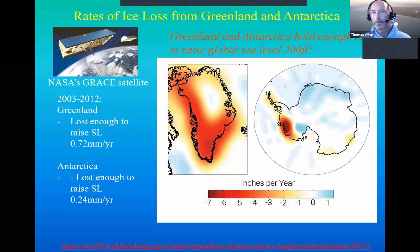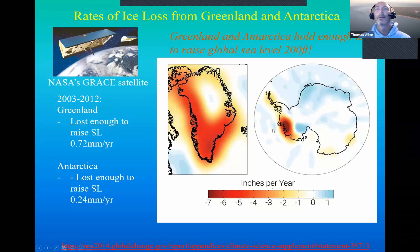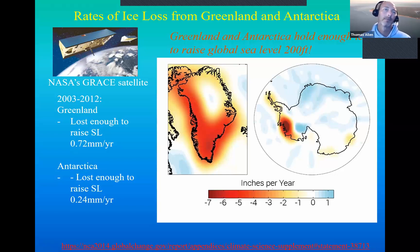We've seen some increases in calving of glaciers — the Piedmont glaciers off of Greenland. We've seen increases in water temperatures underneath the ice sheets of some of the Piedmont glaciers coming off of Greenland too. Antarctica has also lost some ice, and a few large features like the Larsen Ice Shelf have been depleted. We've been seeing an uptick in the contribution of these to sea level rise.